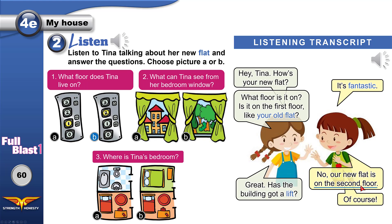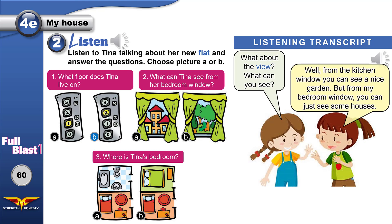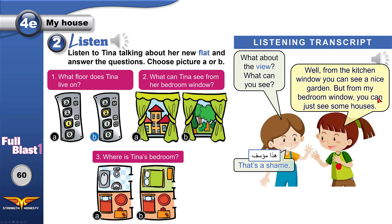Tina lives on the second floor. What about the view? What can you see? — Well, from the kitchen window you can see a nice garden, but from my bedroom window you can just see some houses. — That's a shame. 'What about the view?' means tell me about the view. 'View' — things you can see when you look. 'That's a shame' — that's sad, that's not happy, that's a pity. From my bedroom window you can see houses; from the kitchen, you see a garden. But we're asking about her bedroom view — houses.